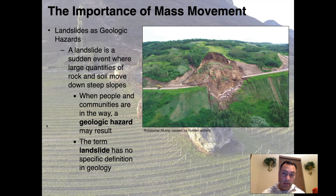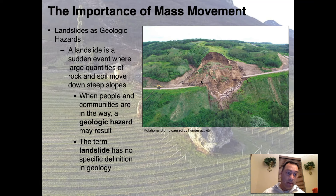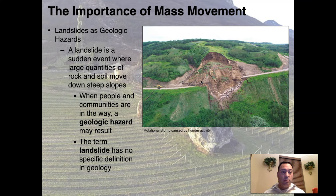The term 'landslide' has no specific definition in geology; geologists use more specific terms. For example, a rotational slump is what the public might call a landslide, but a geologist would recognize it has certain features — it is definitely a slide, but specifically a rotational slide, defined by a certain rate and manner of movement. We're going to go over the descriptions of each type of movement.